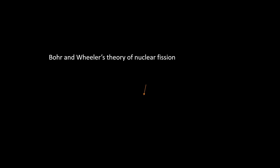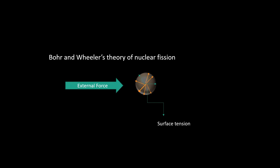A liquid drop has a spherical form due to internal molecular forces responsible for surface tension. According to this theory, an excited liquid drop may oscillate in a number of ways. When applying a large external force, the shape may be changed into ellipsoidal.